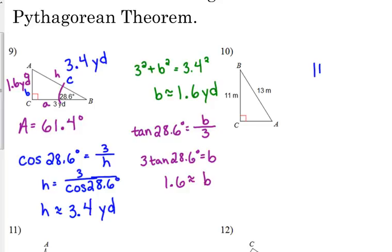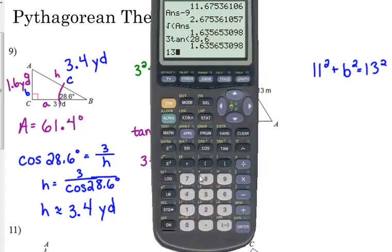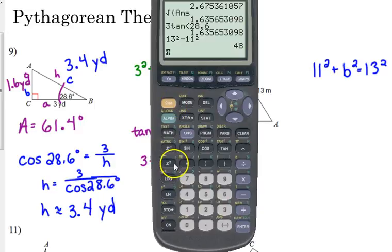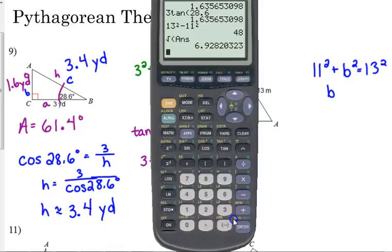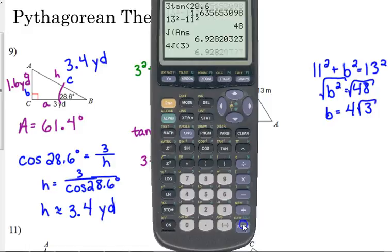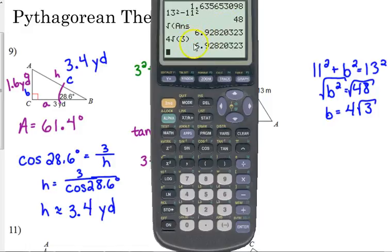So I would go ahead and do 11 squared plus, let's see here, this would be side B. B squared is equal to 13 squared. So 13 squared minus 11 squared, and square root, or actually, let's practice with simplifying our radicals. B squared is equal to 48. 48 is divisible by 16, so that's 4 square roots of 3. And I can confirm that. I can compare the decimal values there. Square root of 48 versus 4 square root of 3.